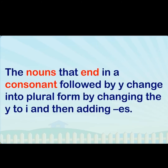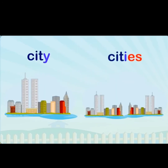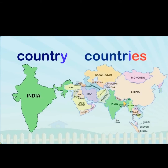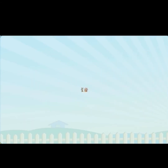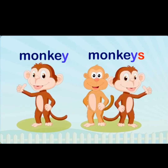Nouns that end in a consonant followed by y change into plural form by changing the y to i and then adding -es. For example: city → cities, country → countries. But monkey → monkeys; after y we simply add -s here.